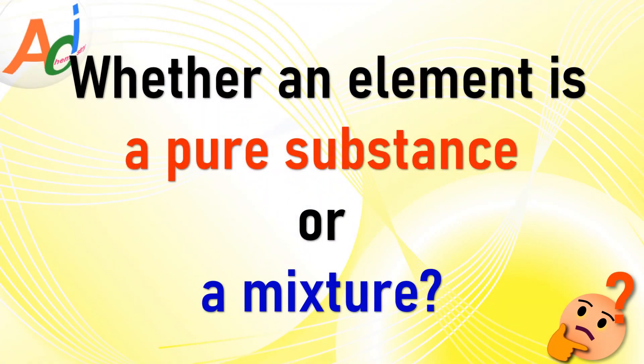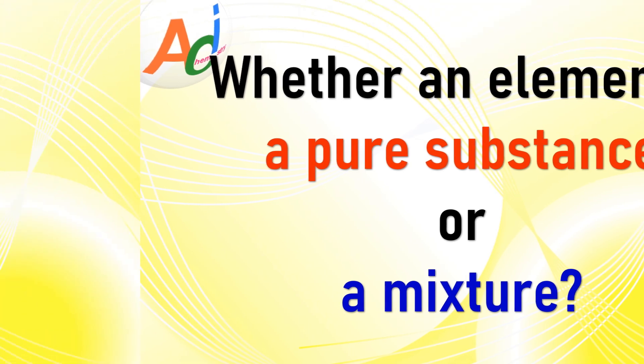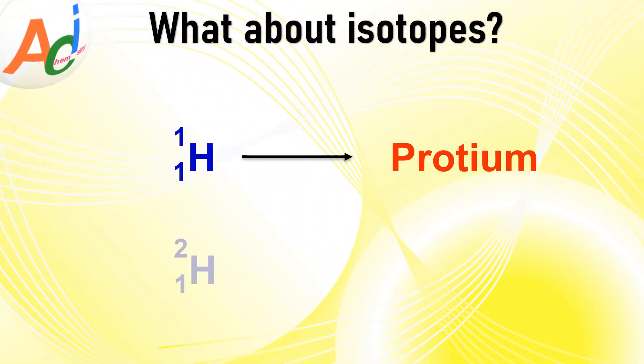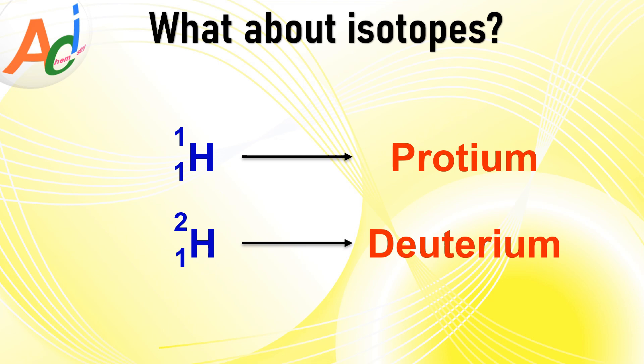This combination of different atomic numbers is what classifies water as a compound and not as an element. Now let us delve deeper into their nature by asking ourselves whether an element is a pure substance or a mixture. To answer this question, we need to consider the isotopic constitution of an element. Let us take hydrogen gas H2 as an example — it constitutes two isotopes: protium and deuterium.